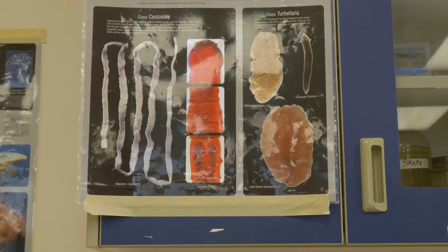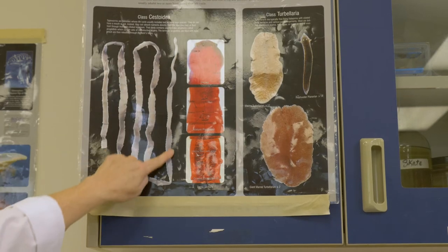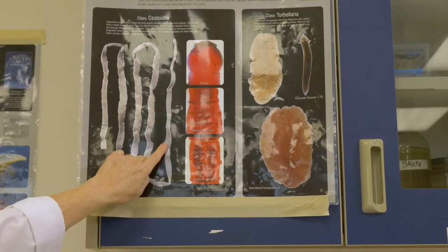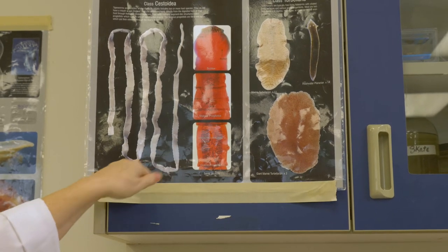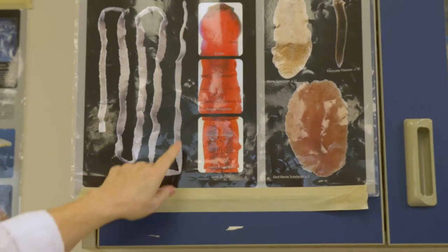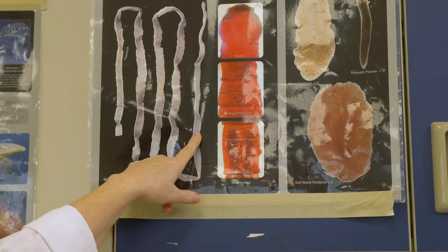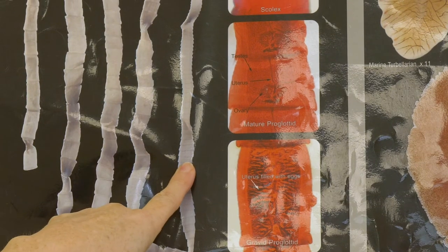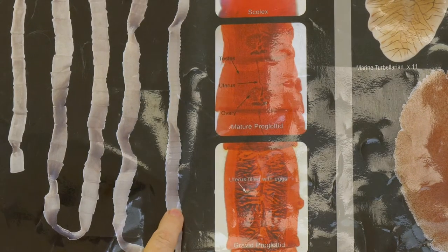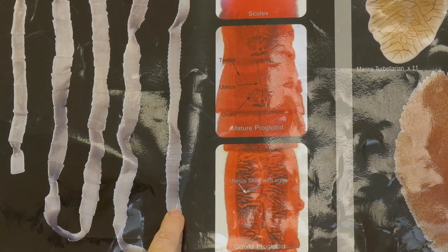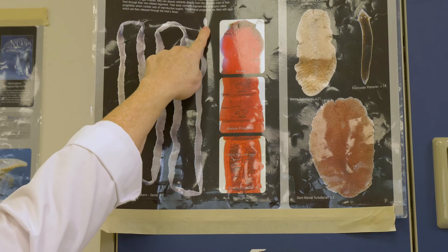All the other segments of the tapeworm — and you can see here all these little pieces that look like pieces of tape stacked one on top of the other — these are all sexually reproductive proglottid sections. All of these can break off and break apart, and each one has eggs in it that can start a whole new batch of tapeworms. But the tapeworm only needs its head to survive.